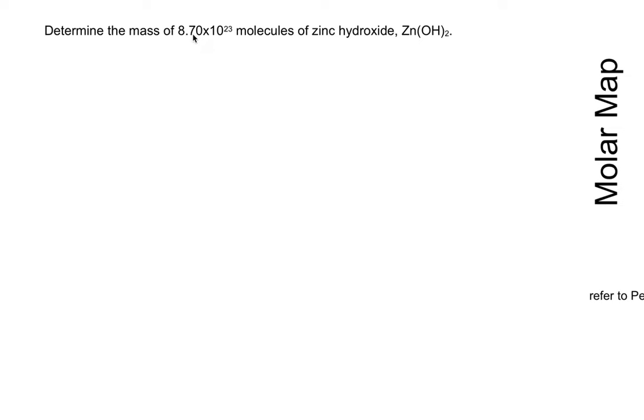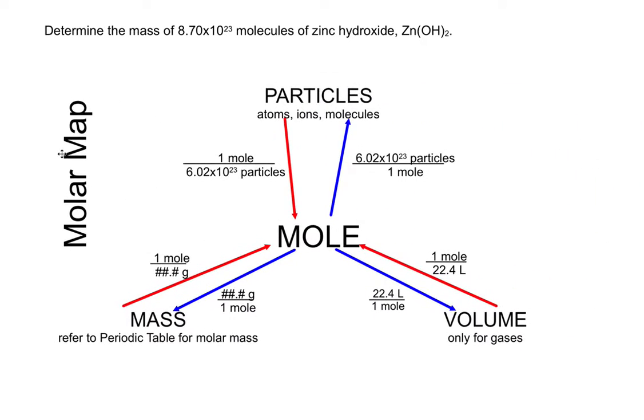Here we have to determine the mass of 8.70 × 10²³ molecules of zinc hydroxide, Zn(OH)₂, and figure out how many grams that is. Now I don't see the word mole here. I have mass and molecules, but not mole. So that means I'm going to have to do a two-step conversion.